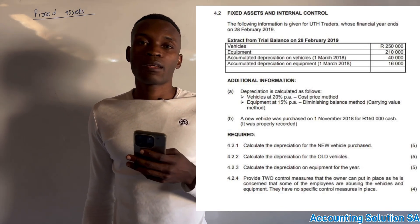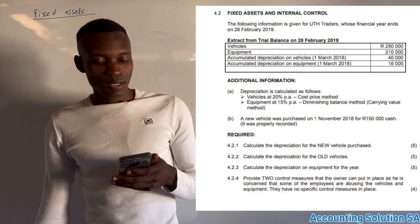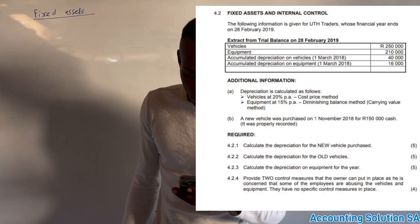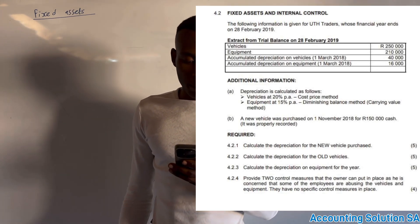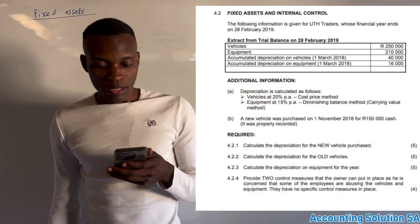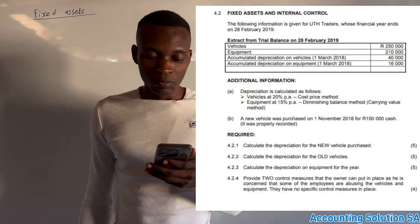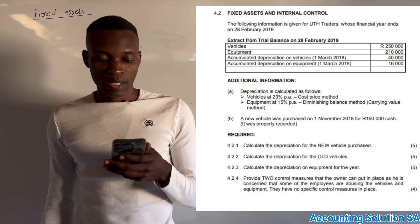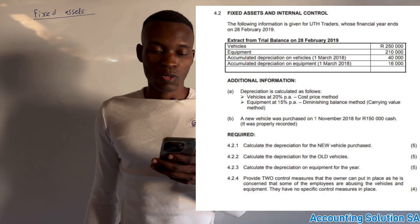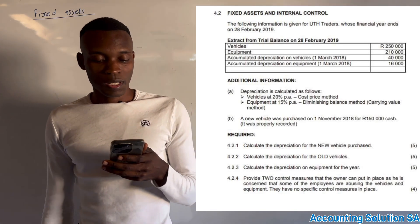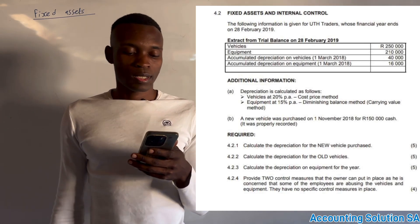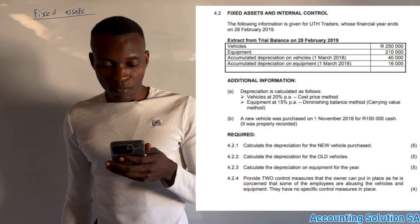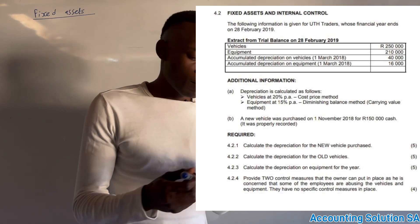The percentages are not the same — vehicles use 20% and equipment uses 15%. A new vehicle was purchased on 1 November 2018 for R150,000 cash, and it was properly recorded. Take note of that — we are going to use it.